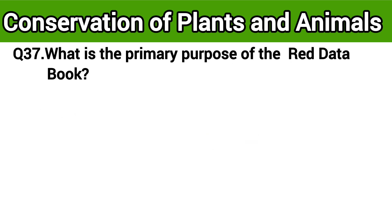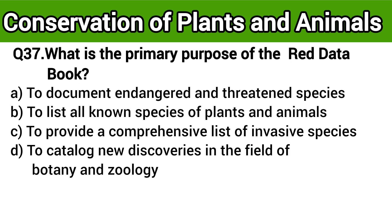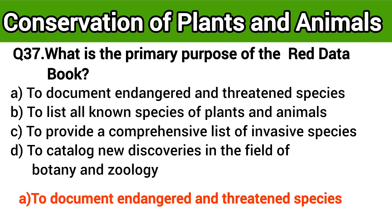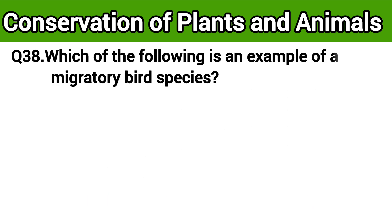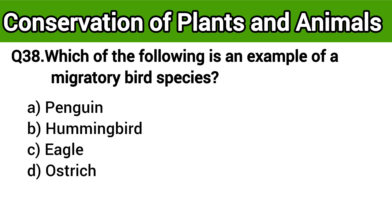Question number 37: What is the primary purpose of the Red Data Book? The right answer is option A: to document endangered and threatened species. Question number 38: Which of the following is an example of a migratory bird species? The right answer is option C: eagle.